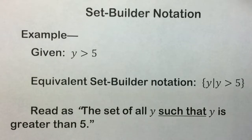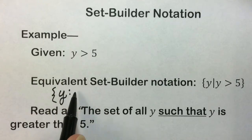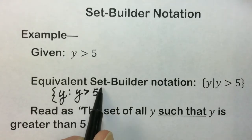Some authors in place of the vertical line will use a colon, so they would have the set-builder notation y such that y is greater than 5.